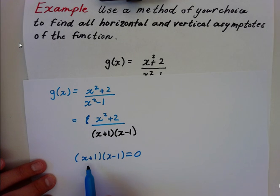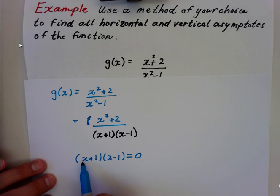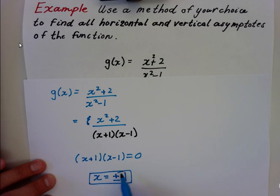Now, what value would make this factor 0? It would be negative 1. What makes this 0 would be 1. In this case, we have two vertical asymptotes. They're X equals 1 and negative 1. So there are my vertical asymptotes.